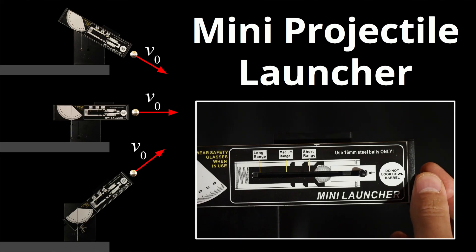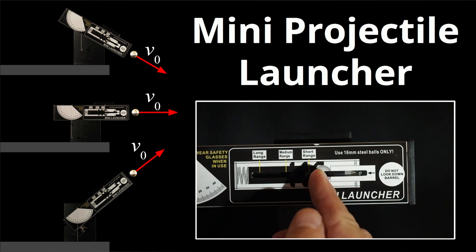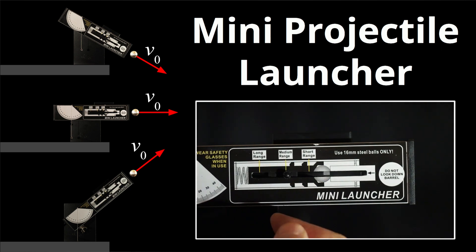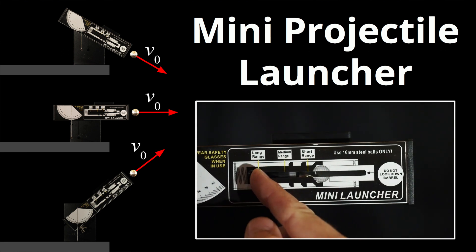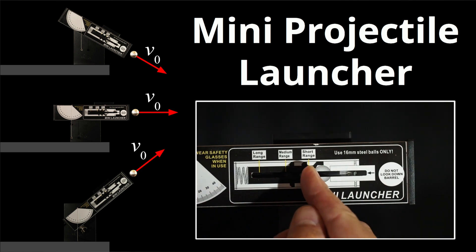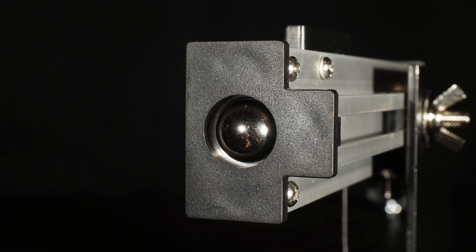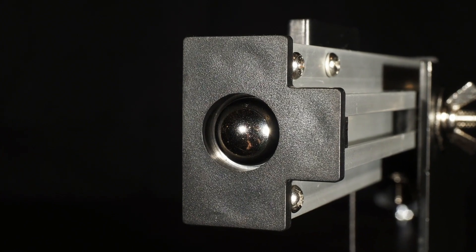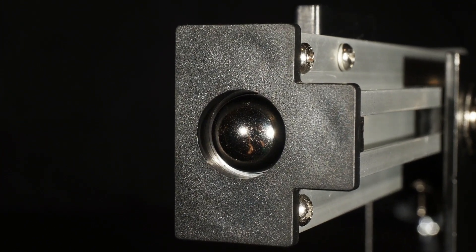This launcher can shoot a small metal sphere at many different angles, has an integrated protractor, and can launch the metal sphere at three different speeds. This Mini Projectile Launcher is an improved version. Arbor Scientific includes a precisely machined metal cup that holds the ball in the plunger for better accuracy and consistency.